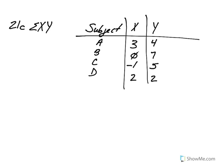And finally, number 21c says take the sum of X multiplied by Y. So it's not the sum of X multiplied by the sum of Y. We first multiply our X times Y values and then we take the summation.